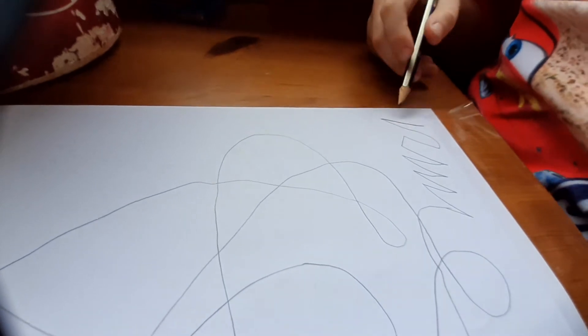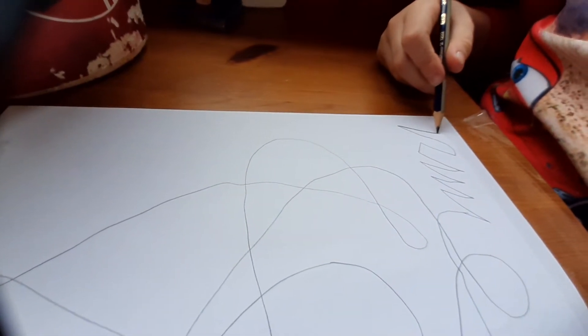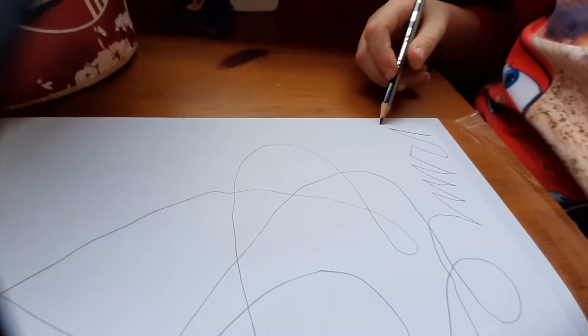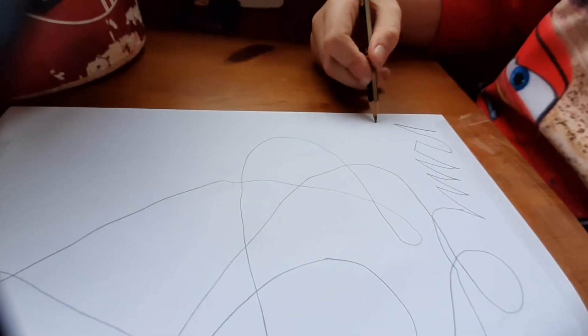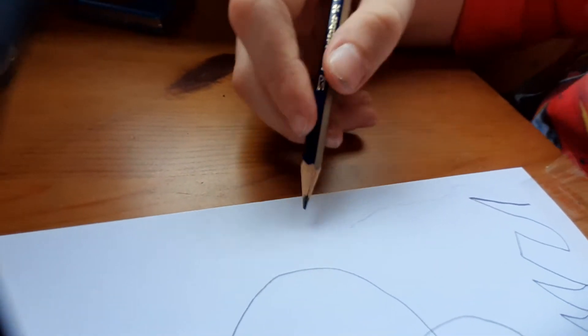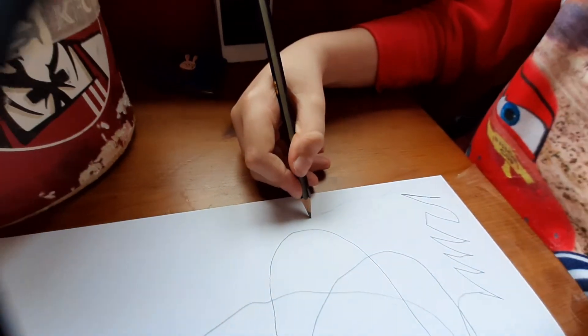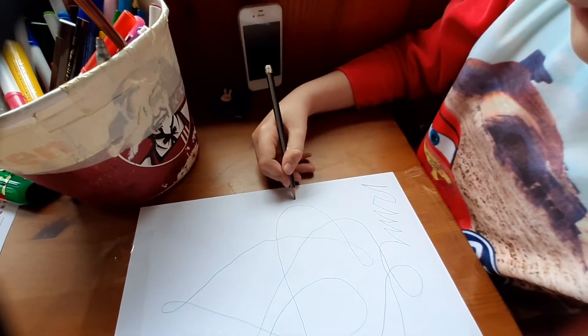Or we can make a really invisible line, a really faint line. Wow, that's really faint. But it's hard to keep track when you're going to be coloring it in.